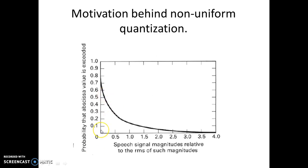So there is high probability that the signal takes on values between 0 and 0.5. Whereas if you go beyond 1.5 or 2, there is very less probability that the signal takes on such values.